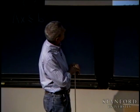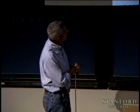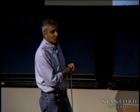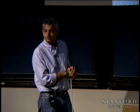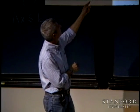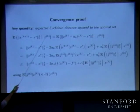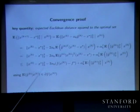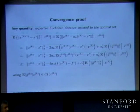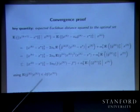Let's look at this. This inequality holds almost surely. Everything here is a random variable. So this inequality — that this distance is less than that — holds almost surely.